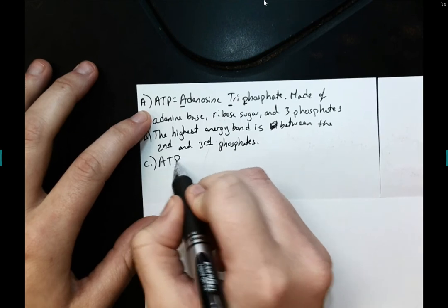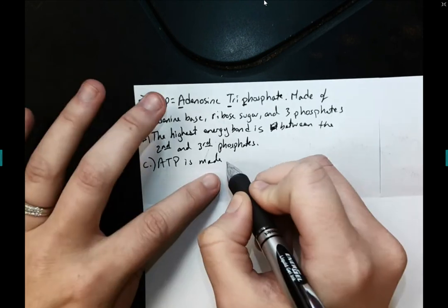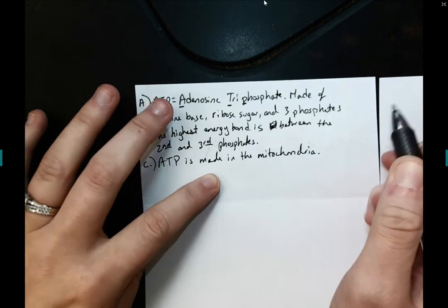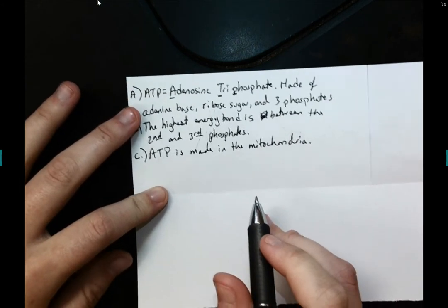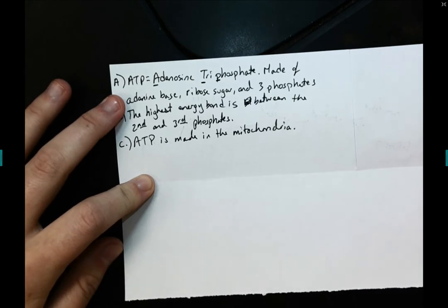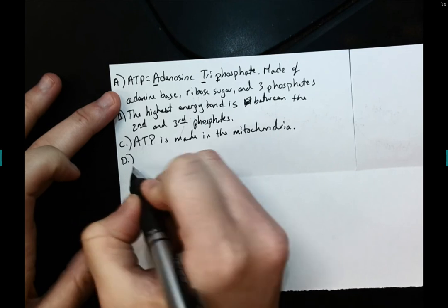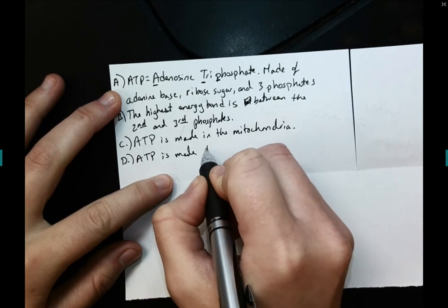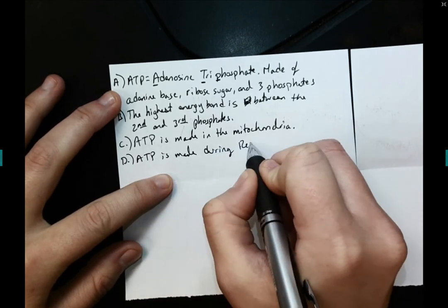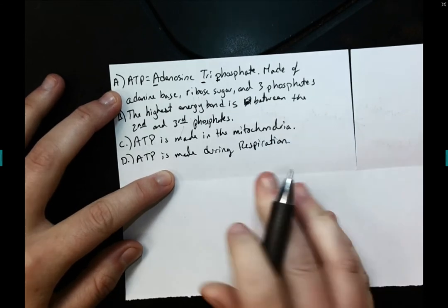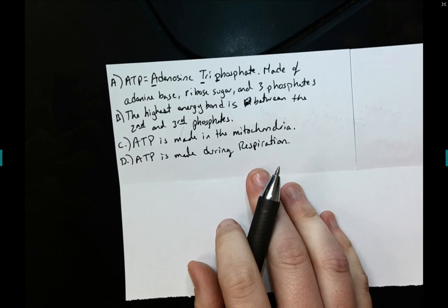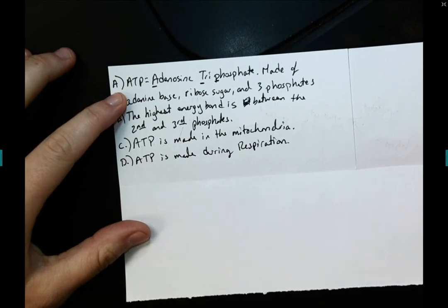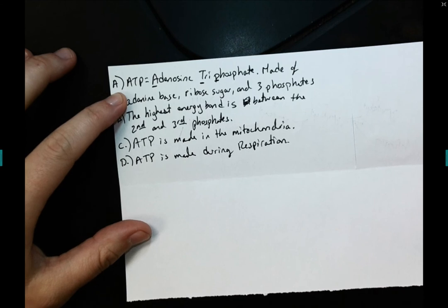I need to know that ATP is made in the mitochondria. We've known since elementary school, mitochondria is the powerhouse of the cell. Well, it's the powerhouse because it is making the ATP. And then more specifically, ATP is made during respiration. And we've talked about respiration, aerobic respiration and anaerobic respiration. Both of those processes make ATP. Now, aerobic of course makes more ATP and then anaerobic makes much less.